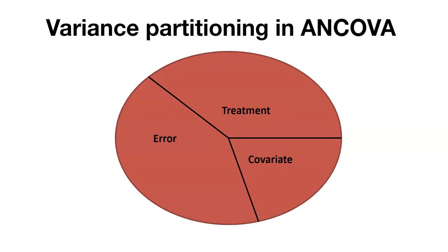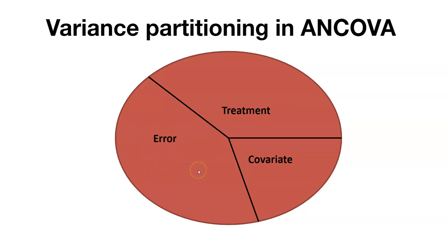When we think about partitioning the variance in ANCOVA, you can see how it blends both regression and ANOVA. The regression part is represented by the covariate — in this case, what is the role of length in predicting the weight of a fish? The ANOVA part is represented by the treatment — what is the species and how does it influence the weight? There will also be error we can't explain by treatment or covariate. This is how you might think about partitioning all that variability.